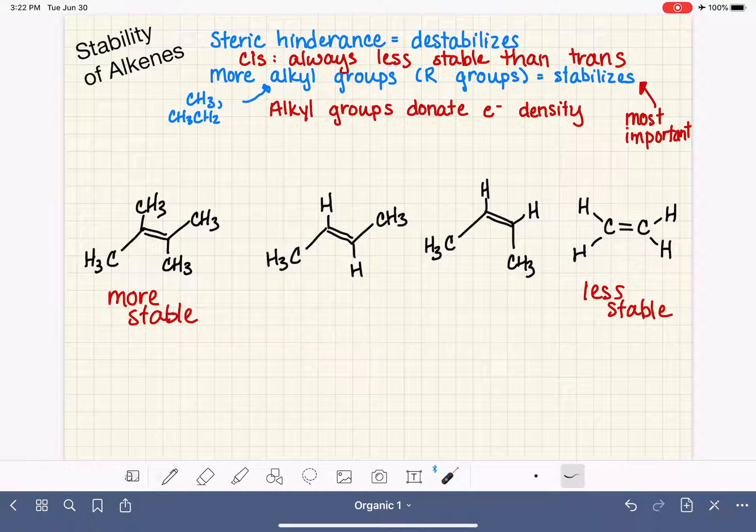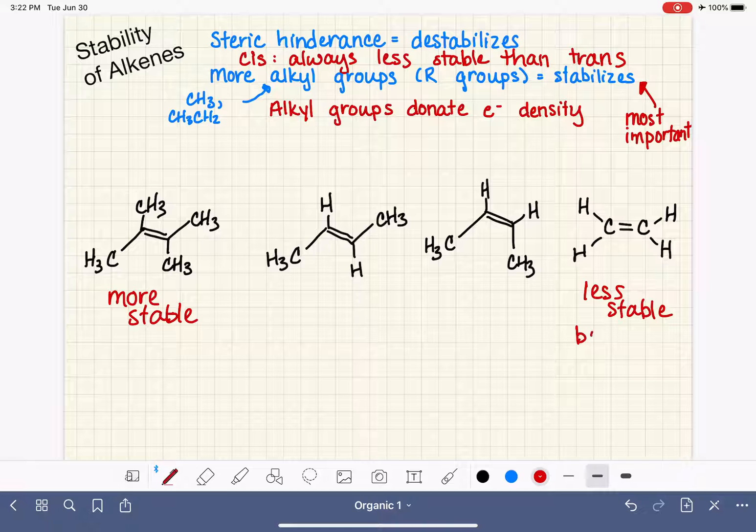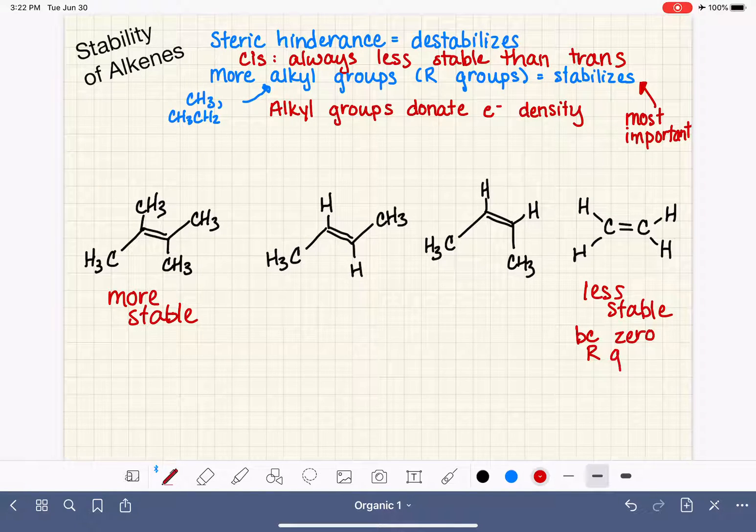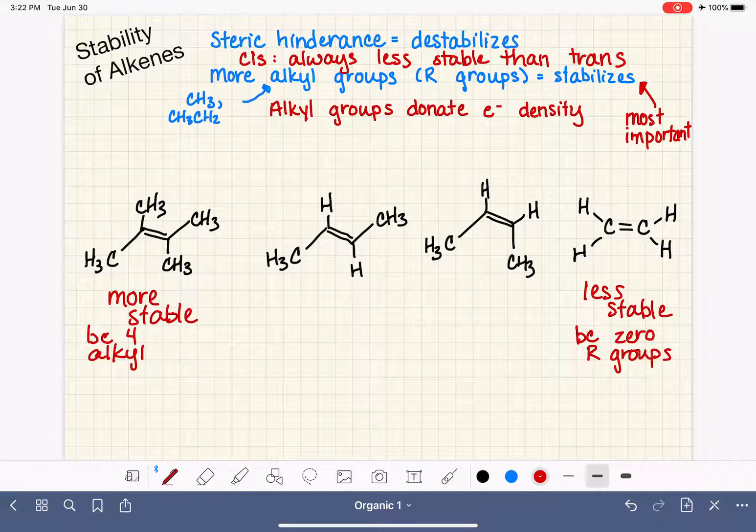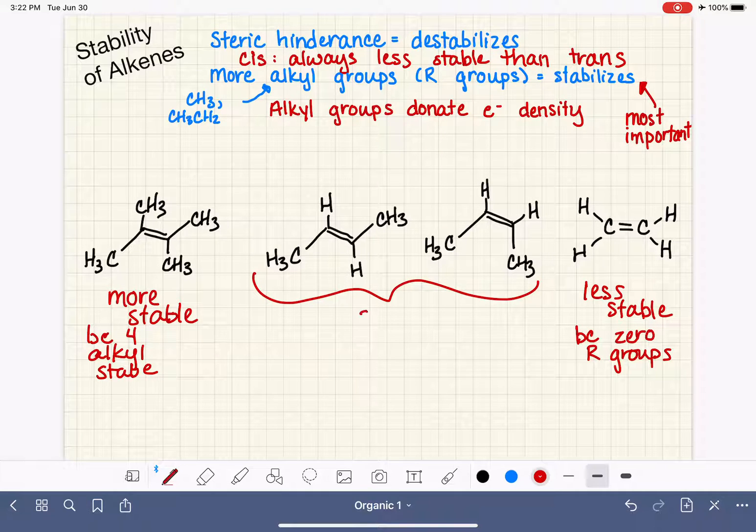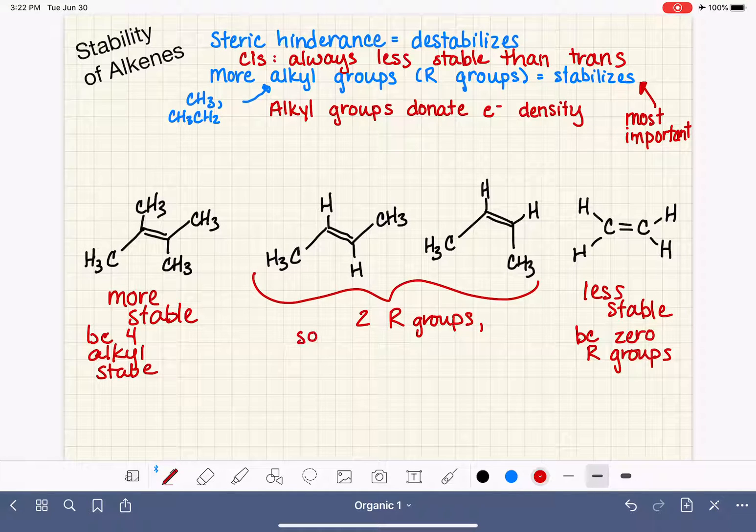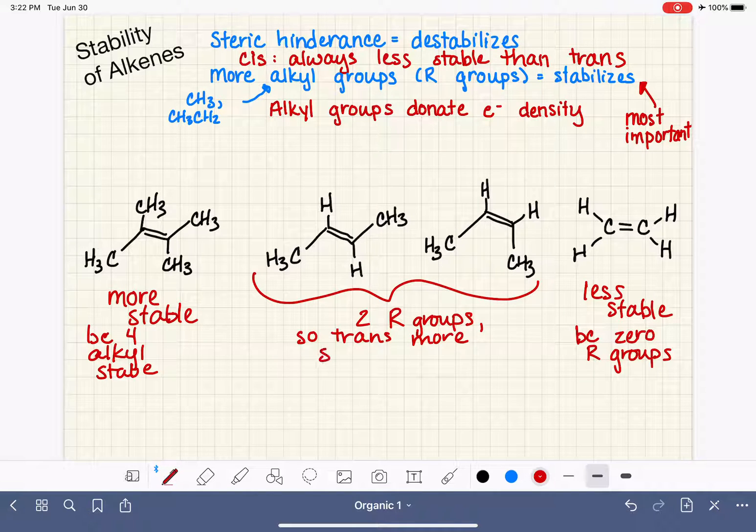The more alkyl groups you have, the more that they can stabilize that double bond. Our molecule with no alkyl groups is the least stable. Our molecule with four alkyl groups is the most stable. And when we have two alkyl groups, so in that regard it's a tie, then we use steric hindrance. So the trans is more stable than cis.